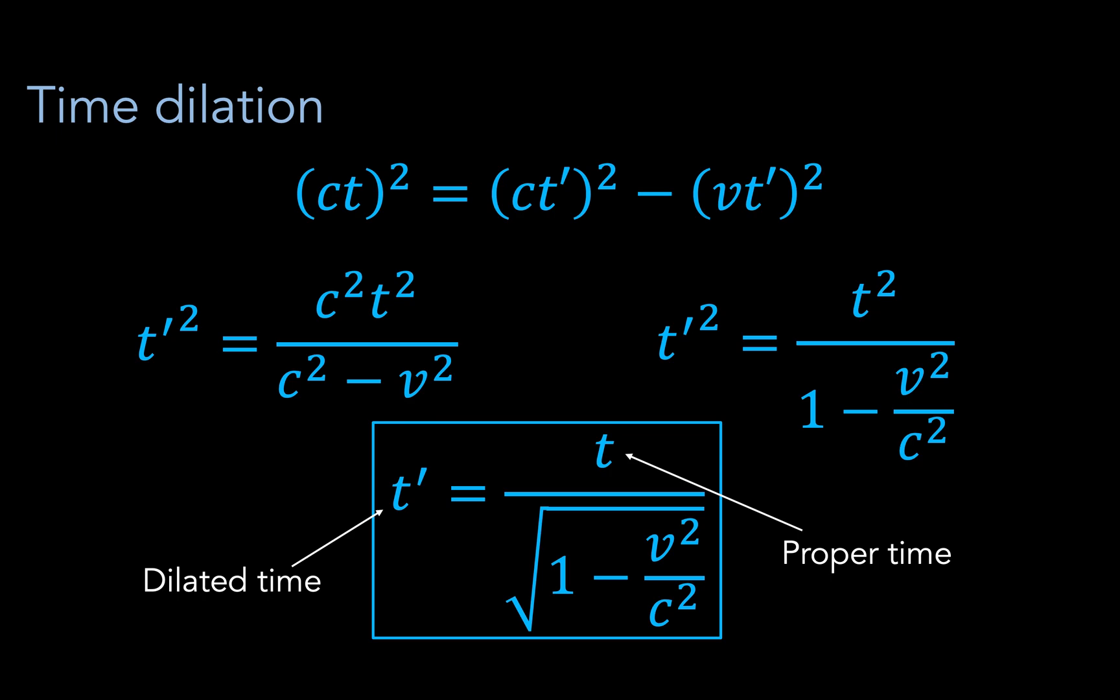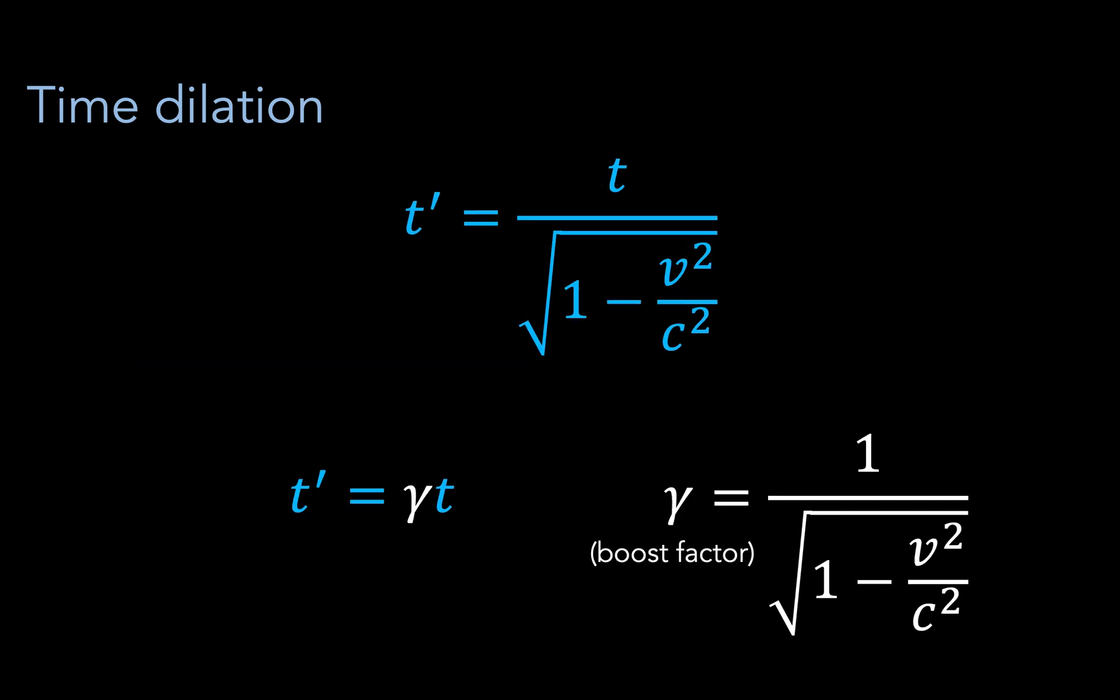We can also rephrase this equation with a variable gamma that's typically called the boost factor, and this boost factor will tend to appear quite a lot in the mathematics of special relativity.